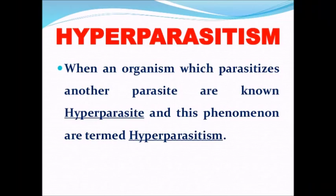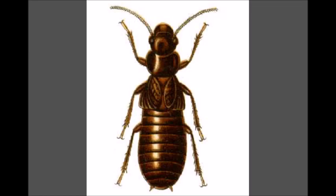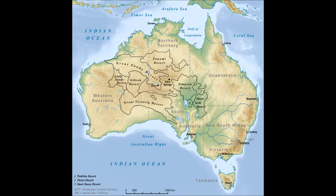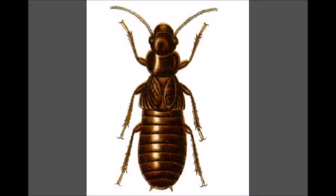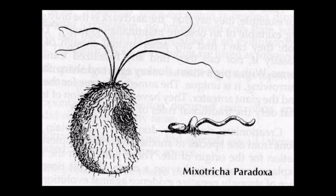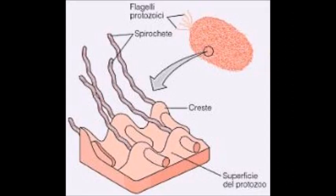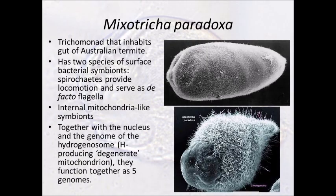Hyperparasitism is when parasites parasitize other parasites — yes, this really does happen. An example is Darwin's termite — Darwin's Australia, not Charles. The protozoan Myxotricha paradoxa lives in its gut, and spirochete and bacillus bacteria live on the protozoan. At some point, the bacteria infected the protozoan, and the protozoan infected the termite.